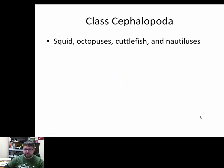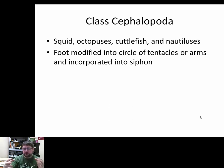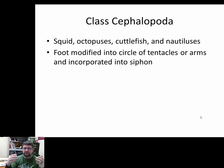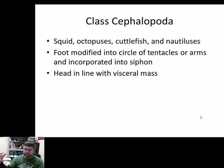Cephalopods include squid, octopus, cuttlefish, and nautilus. Instead of having a foot, the foot has been modified into tentacles and arms, and they incorporate a siphon. The siphon we saw in bivalves is still present in Cephalopoda, but it's not used for filter feeding — instead it's used for locomotion. The head is in line with the visceral mass, giving a more streamlined body.